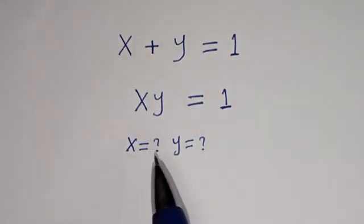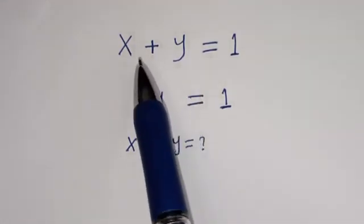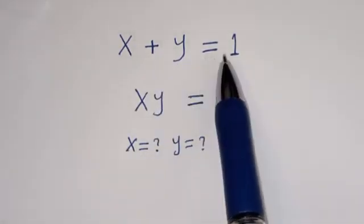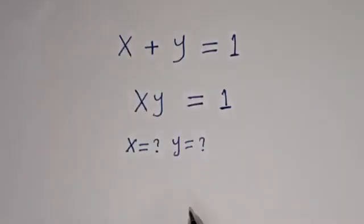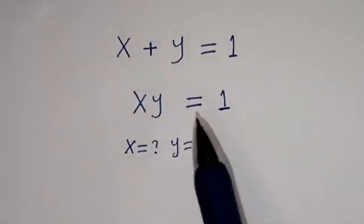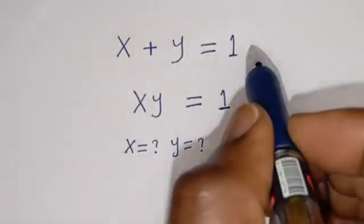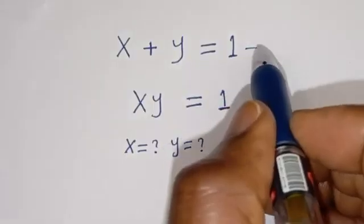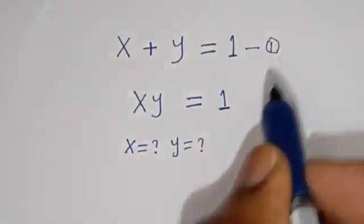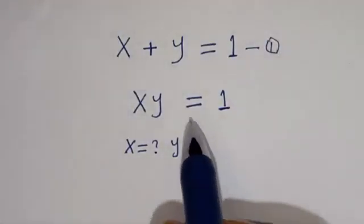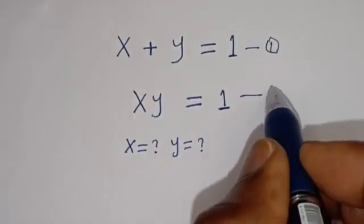Hello. How to solve for S and Y in this equation: S plus Y is equal to 1, and XY is equal to 1. From here, S plus Y is equal to 1 — let's call this equation 1. And SY is equal to 1 — let's call this equation 2.